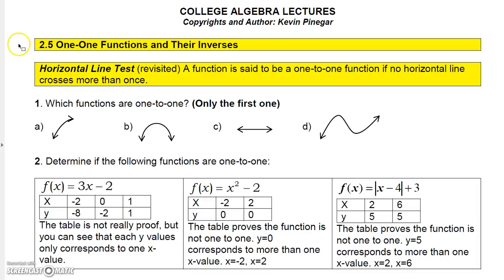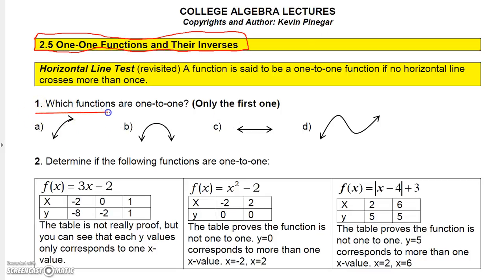Today we're going to talk about one-to-one functions and their inverses. In the last section we led up to this, and we've already talked about one-to-one functions. You might remember that you can use the horizontal line test to determine if functions are one-to-one. This first function is one-to-one because the horizontal line always just crosses it at one place.